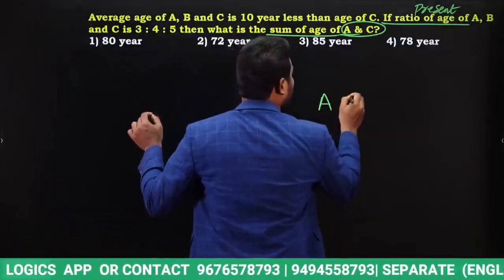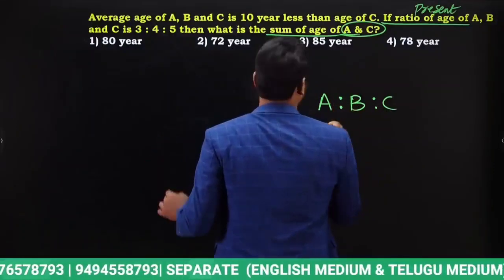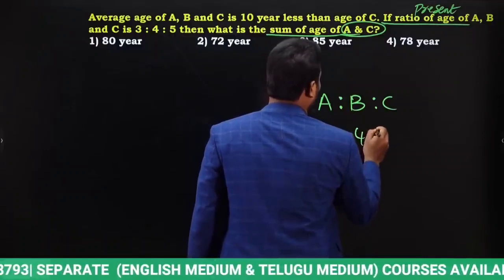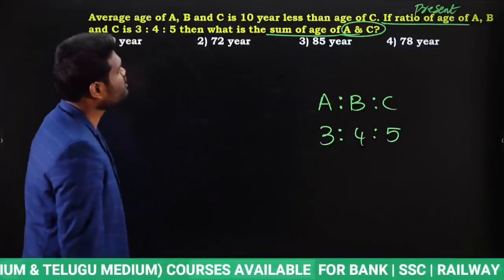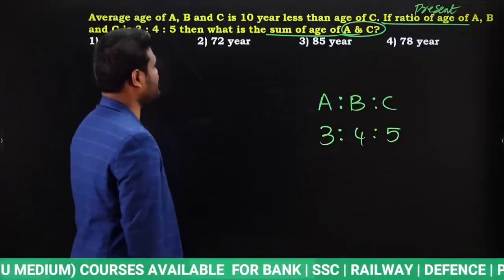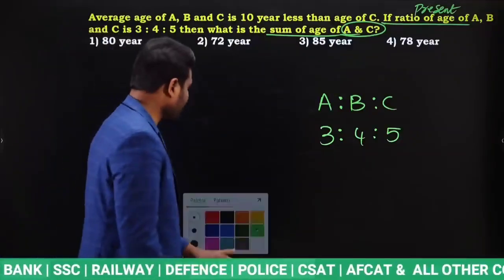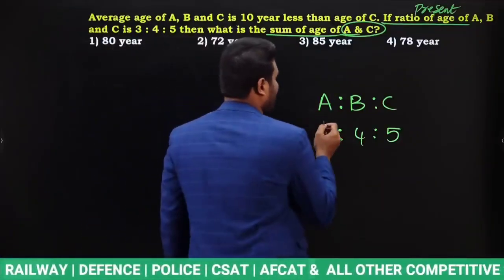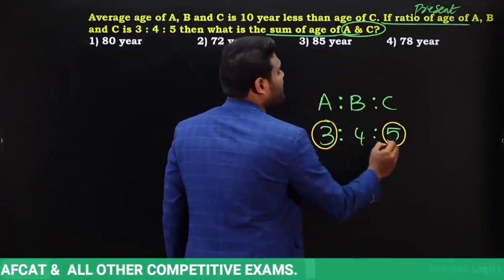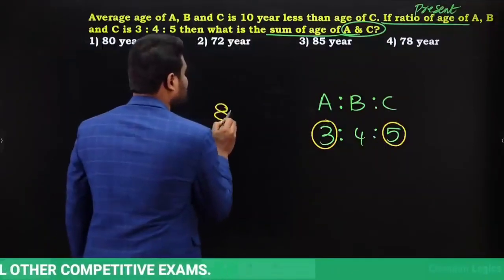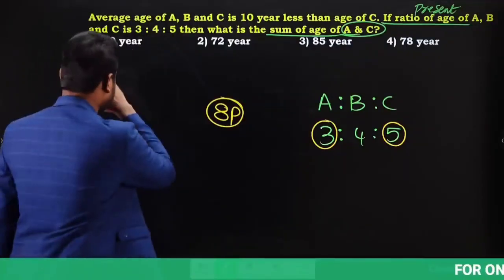The present age ratio of A, B, C is 3:4:5. We need the sum of present ages of A and C. Present age of A should be a multiple of 3, and present age of C should be a multiple of 5. Sum of A and C is 3 plus 5 — that's 8 parts — so our answer should be a multiple of 8.